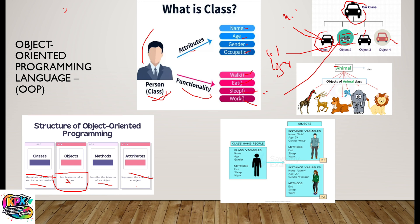We could say that a giraffe has a very long neck, which is an attribute. The elephant has a very long nose and is very big. The lion has a mane around its head. All these are what we call attributes of the class. And then we have functionalities: the lion roaring, the dog barking. So that is it for classes, objects, methods, and attributes for object-oriented programming.